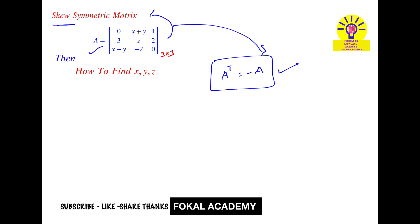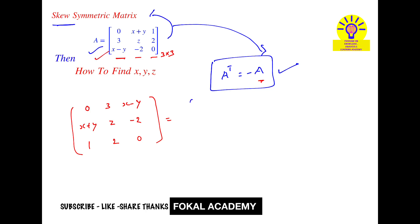First, transpose the given matrix. Transpose means interchange of rows and columns. The first column written as first row gives: 0, 3, x minus y. Second column as second row: x plus y, j, minus 2. Third column as third row: 1, 2, 0. This equals minus of the given matrix, so applying minus gives: 0, minus x minus y, minus 1, minus 3, minus z, minus 2, minus x plus y, plus 2, 0.